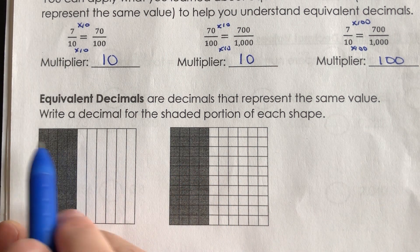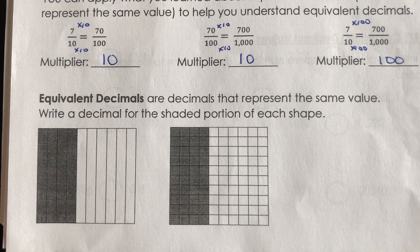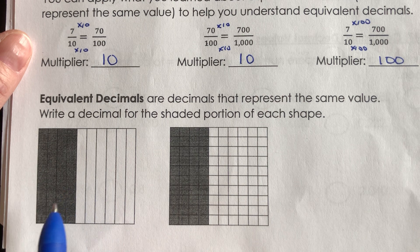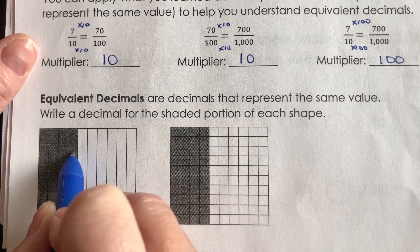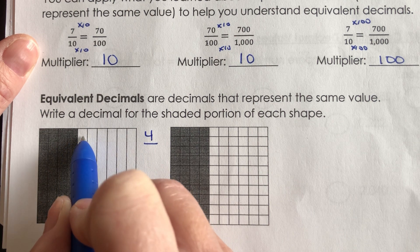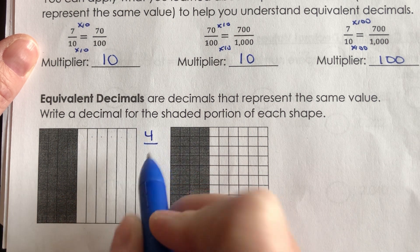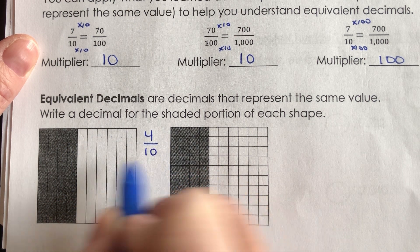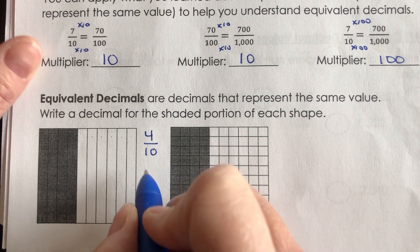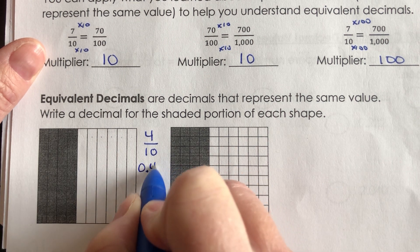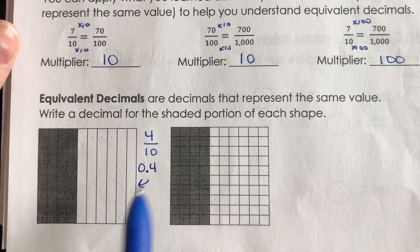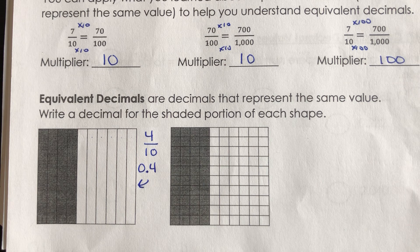The fraction I would write for the first shape: four pieces are shaded out of 10 total. So I would say 4 tenths of this is shaded. And remember that as a decimal, we would write 0.4. So the decimal of the shaded portion here would be 0.4, because that's 4 tenths.